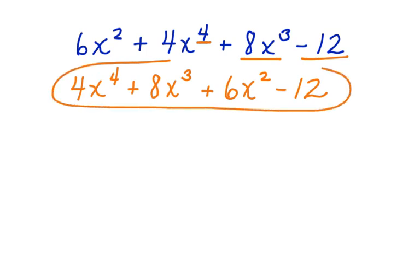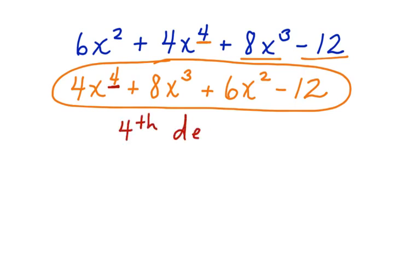Here's the standard form. What's the degree of the polynomial? To find the degree, we look at the highest exponent in the polynomial, which is 4. So this polynomial is a polynomial to the fourth degree.